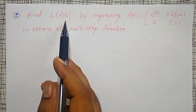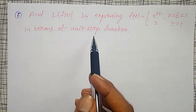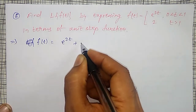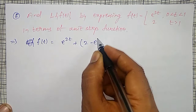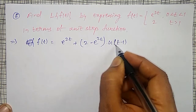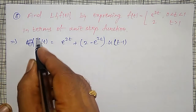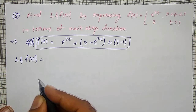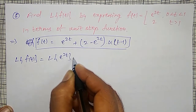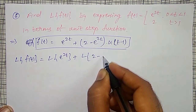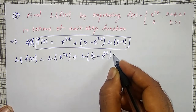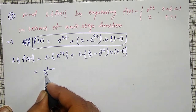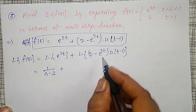Another example: find the Laplace transform by expressing f(t) in terms of unit step function, where f(t) = e^(2t) for t ≤ 1 and 2 for t > 1. Expressing in unit step form: f(t) = e^(2t) + [2 − e^(2t)] · u(t − 1), since 1 is the discontinuous point. L{f(t)} = L{e^(2t)} + L{[2 − e^(2t)] · u(t − 1)} = 1/(s−2) + e^(−s) · L{f(t)}.